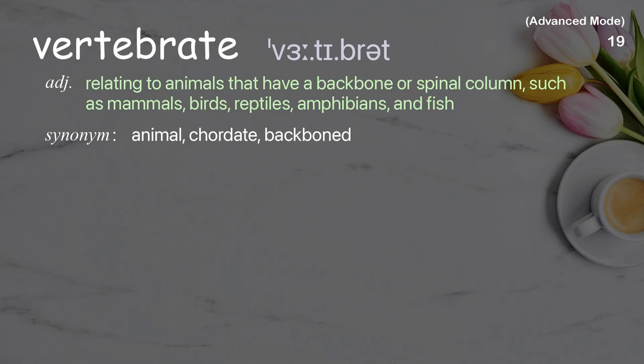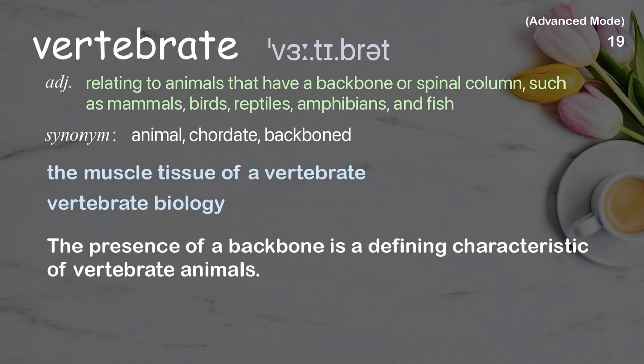Vertebrate: Relating to animals that have a backbone or spinal column, such as mammals, birds, reptiles, amphibians, and fish. Examples: the muscle tissue of a vertebrate, vertebrate biology. The presence of a backbone is a defining characteristic of vertebrate animals.